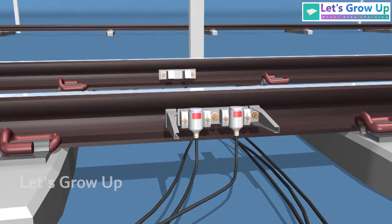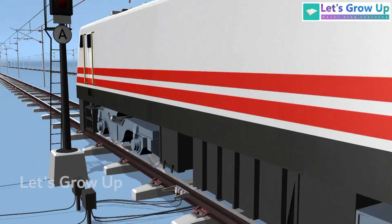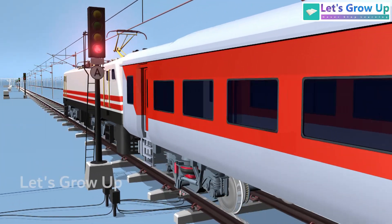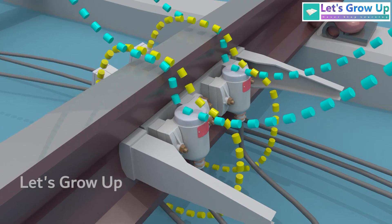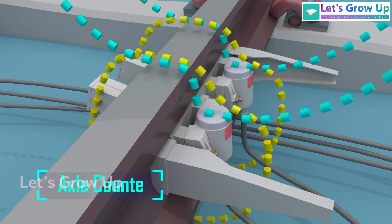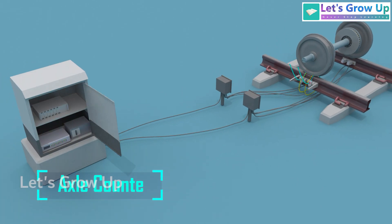Sensors play a crucial role in ensuring the safety and efficiency of railway transportation systems. Today we are delving into the heart of railway safety: the axle counter. We'll explore how this crucial track sensor works.